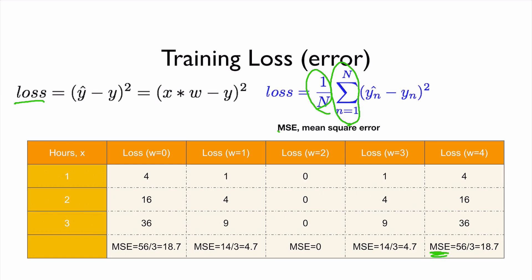More formally, the loss is the sum over all data points divided by N — that is, the average. We call this MSE, or Mean Squared Error. Expressing the loss as MSE: when W is 0, MSE is approximately 18.7; when W is 1, MSE is 4.7; when W is 2, MSE is 0; when W is 3, MSE is 4.7.